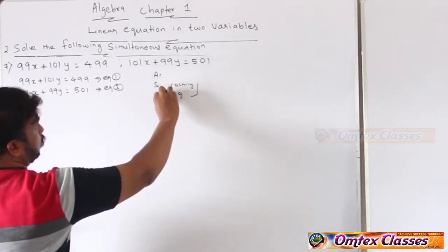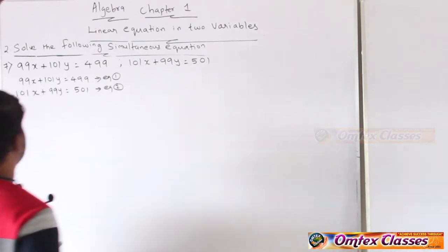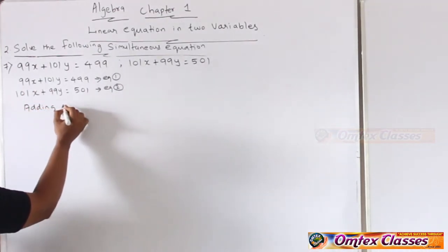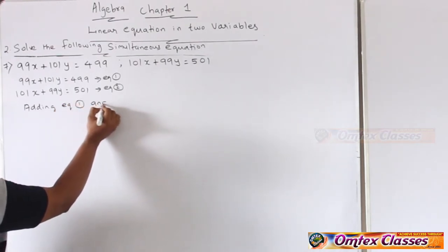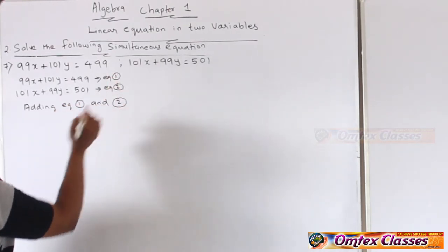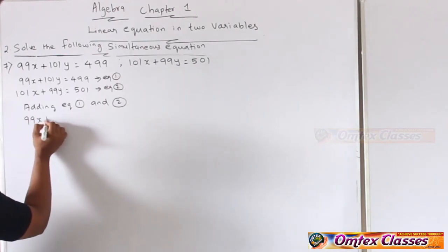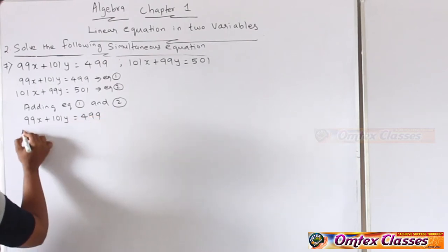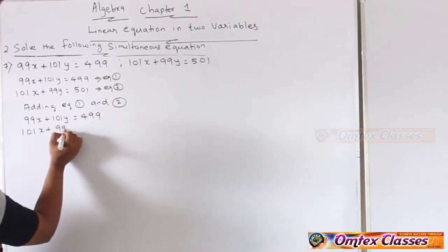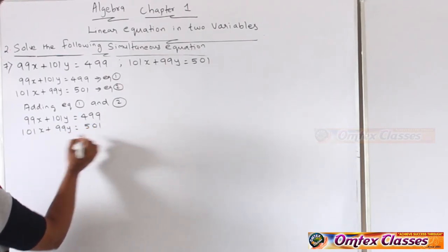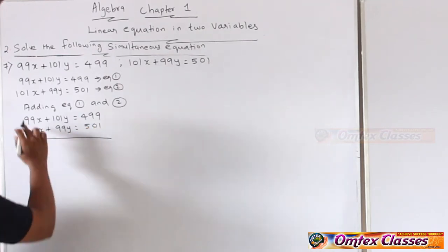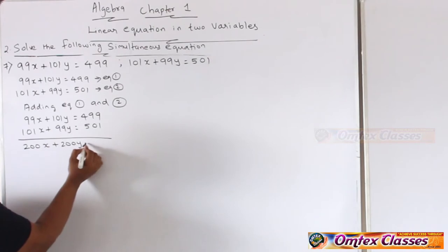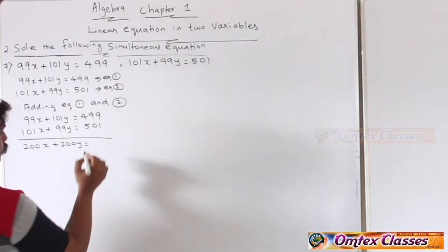This is an easy sum — pay attention. First we have to do adding. Adding equation 1 and 2: when we add both, we get 99x plus 101x = 200x, and 100y plus 99y = 200y (wait — 100y plus 99y), equal to 499 plus 501 = 1000. So we get 200x plus 200y equal to 1000.